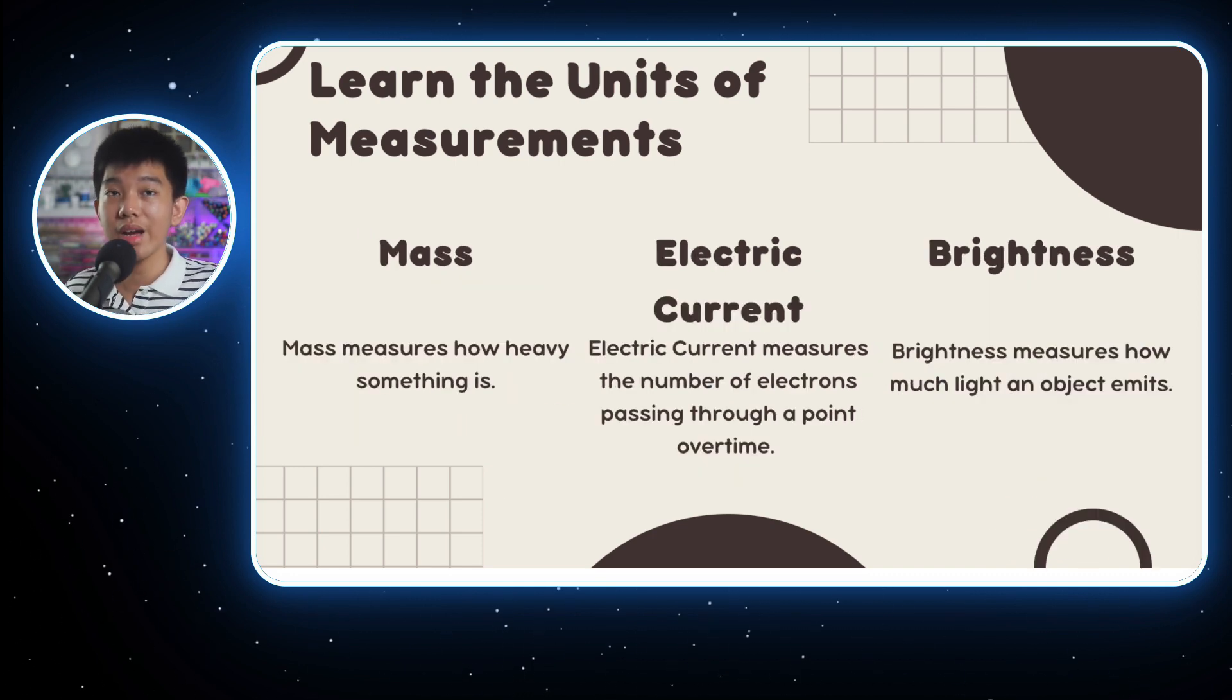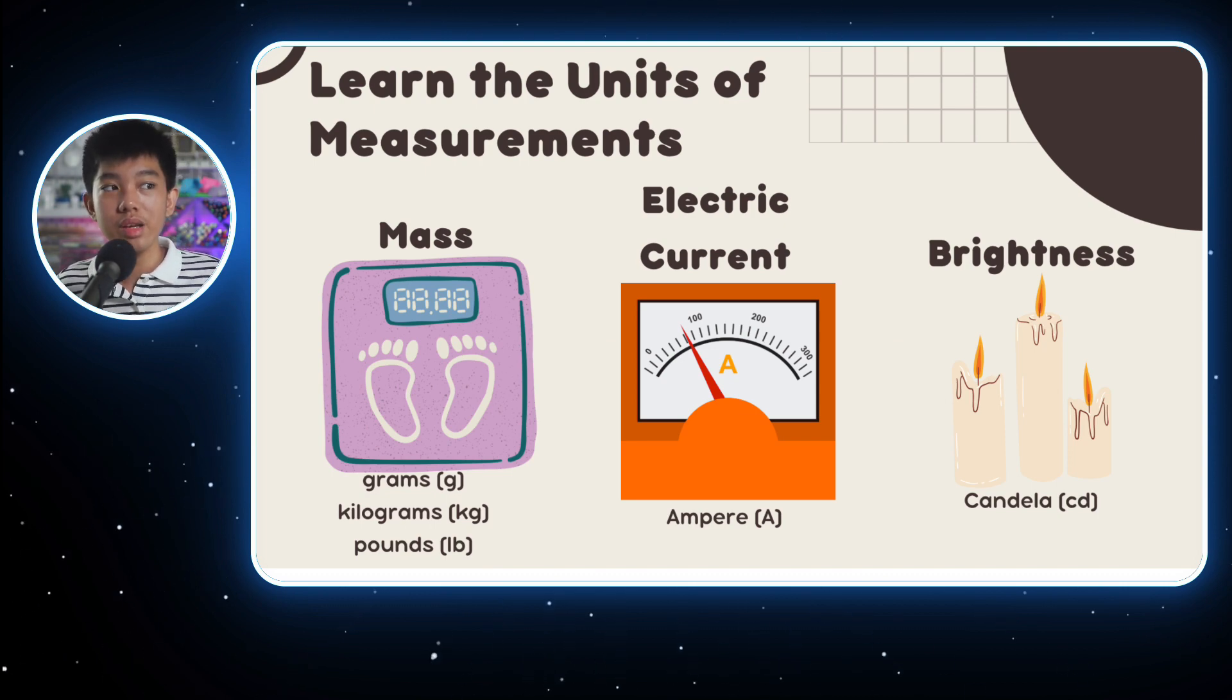Next up is mass, or weight if you're a science man, which is used to measure how heavy something is. For electric current, it's used to measure how many electrons pass through a certain point over time. And for brightness, it measures how much light something is emitting. When measuring these, try using candela for brightness, an ampometer for electric currents, and a weighing scale for mass.